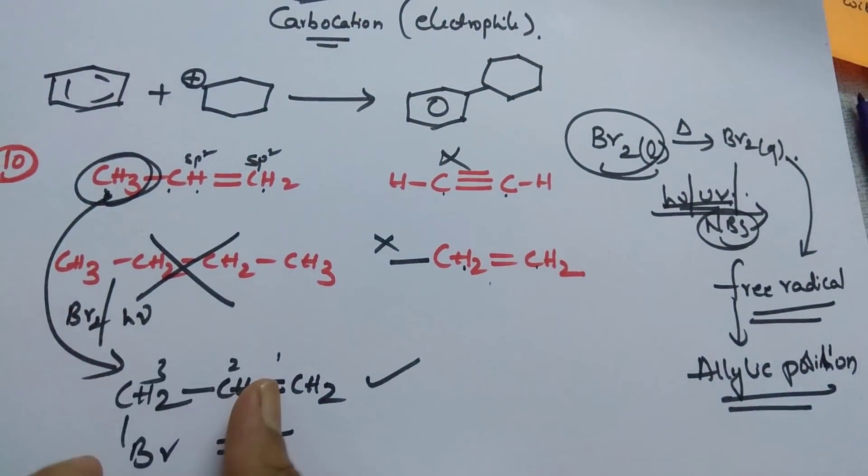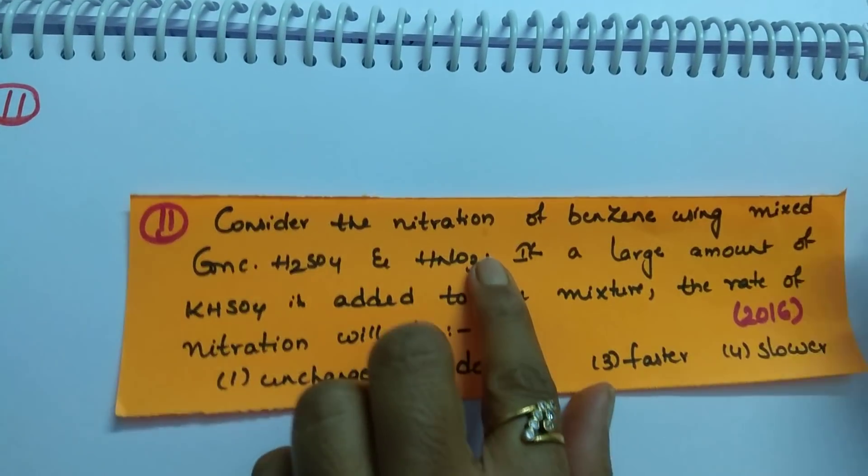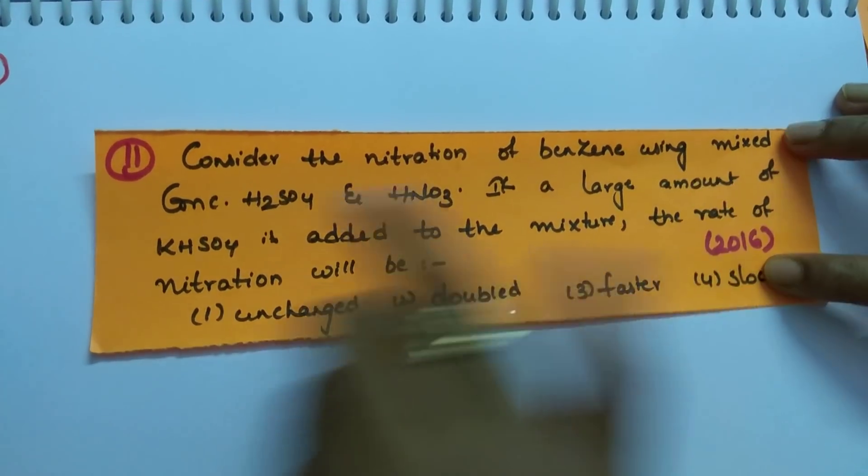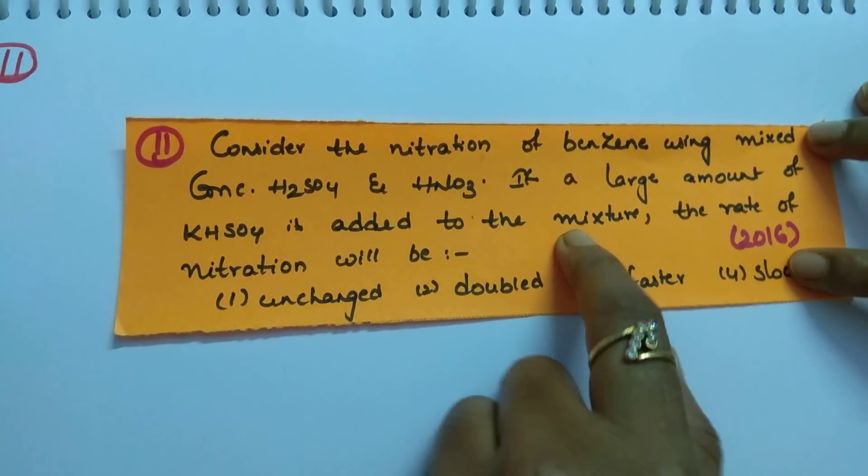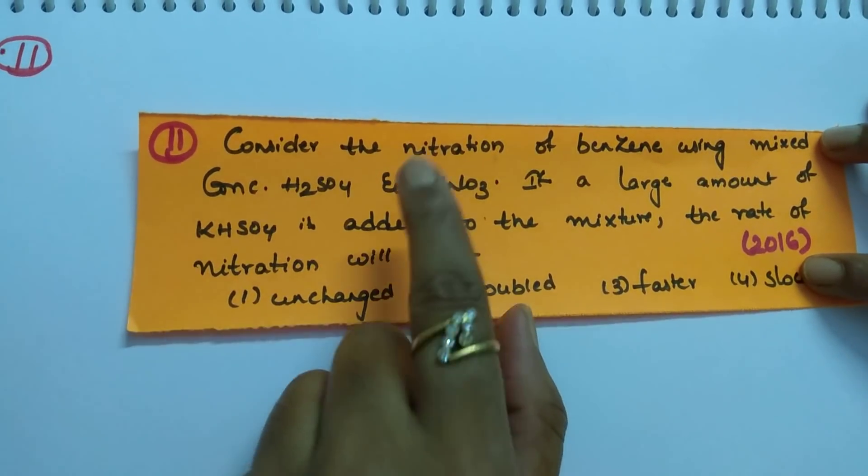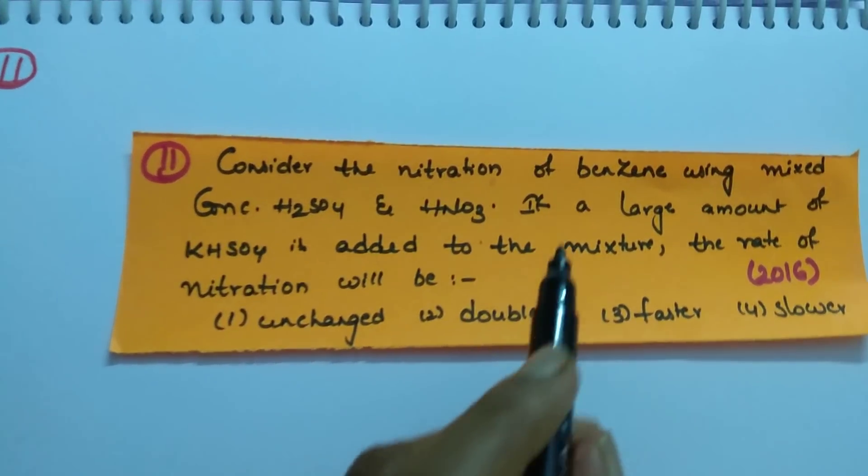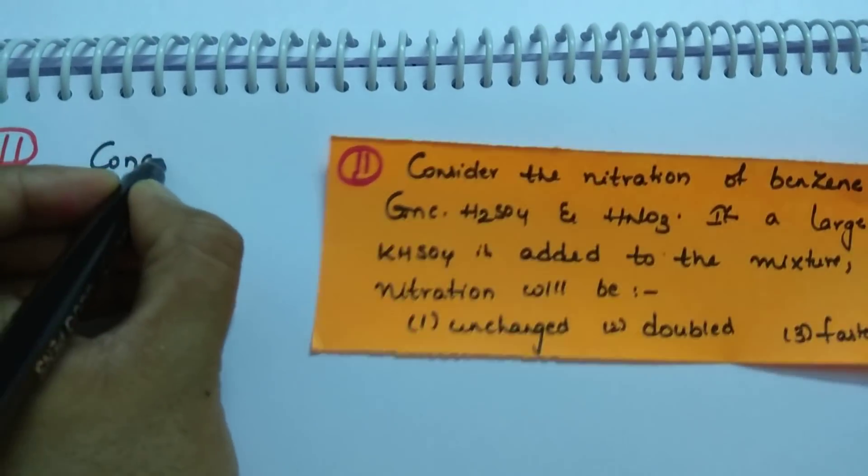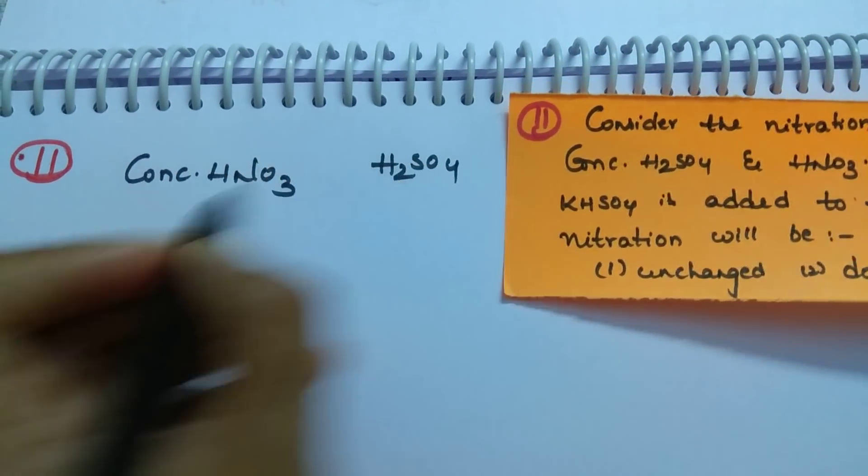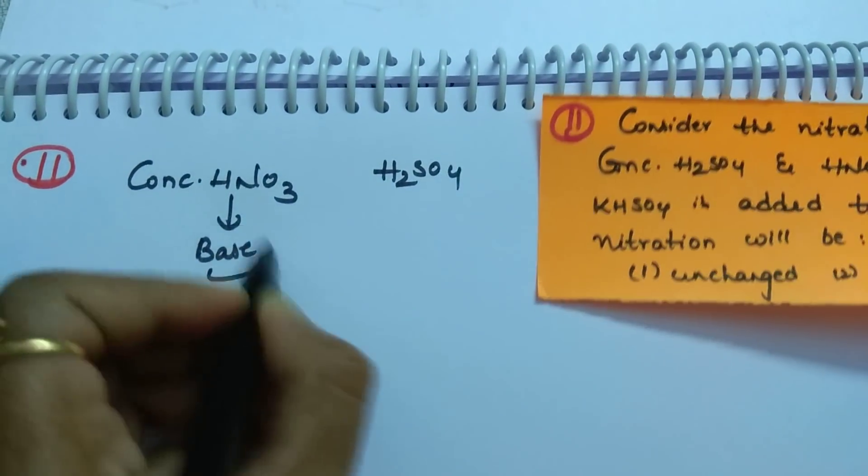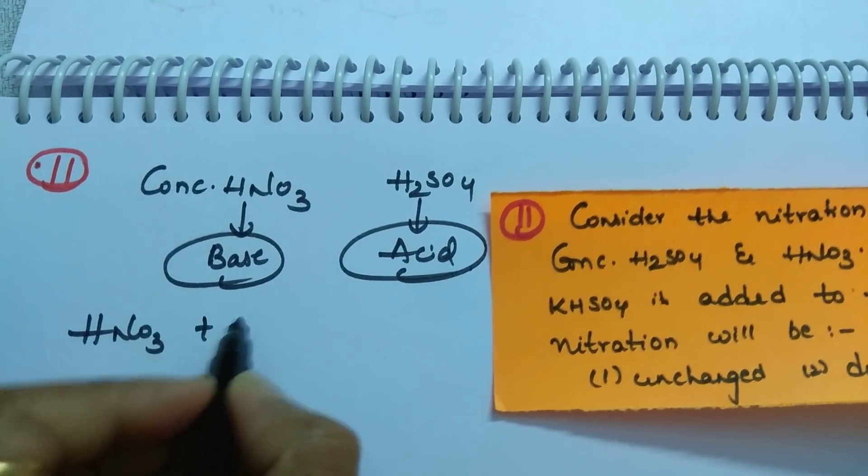Next question. Consider the nitration of benzene using mixed concentrated H2SO4 and HNO3. If a large amount of KHSO4 is added to the mixture, the rate of nitration will be. See here, students, what we are doing? We are taking a mixture of concentrated H2SO4 and HNO3. This is called which mixture? This is called as nitration mixture. Concentrated HNO3 and H2SO4. Concentrated H2SO4. Actually, HNO3 acts as a base and H2SO4 acts as an acid. Both reacts with each other.